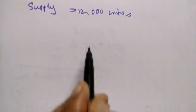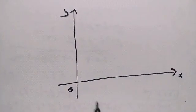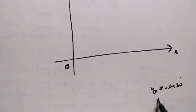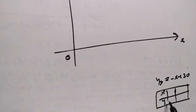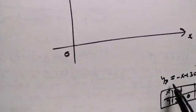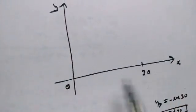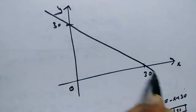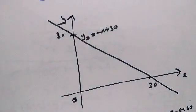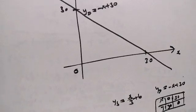Demand equals supply — now drop a graph on the axes. For the first equation — demand: yd equals minus x plus 30. When x equals 0, y equals 30. When y equals 0, x equals 30. So the demand line passes through (0, 30) and (30, 0).